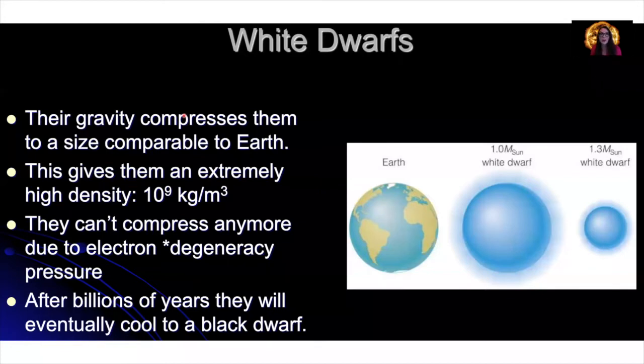Now white dwarfs are really interesting, and we know that they have a particular spot on the HR diagram. White dwarfs, their gravity is immense. Their gravity compresses them into the size comparable to earth. So here's the earth, and here is a white dwarf. So the core of our sun at the end of its lifetime will be contracted into the super dense core that is now what we'll call the white dwarf.